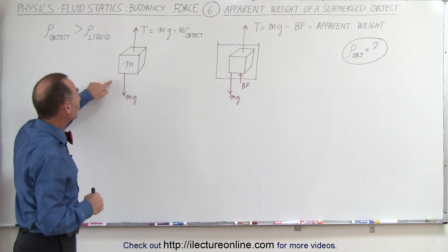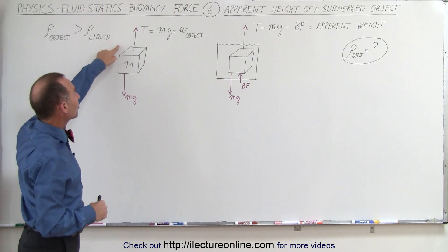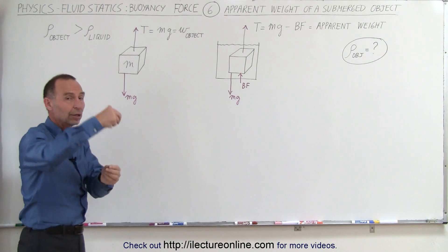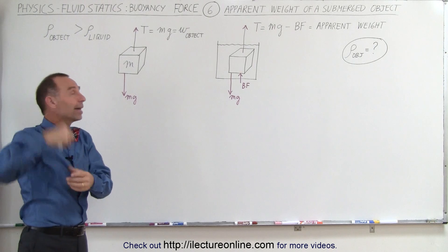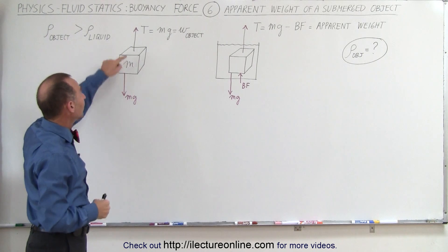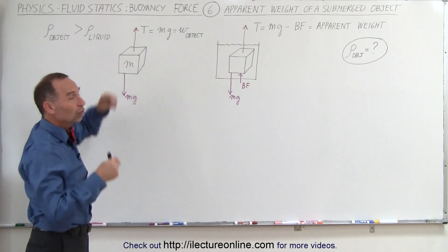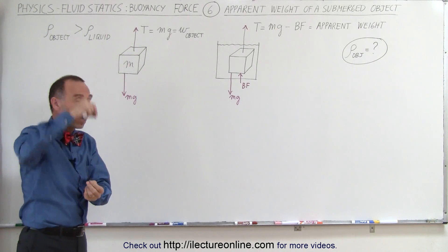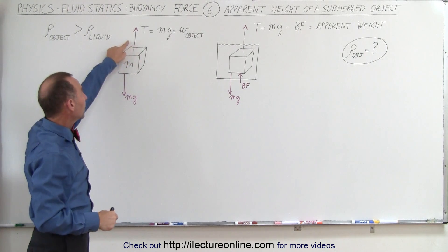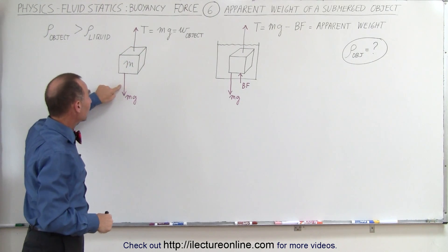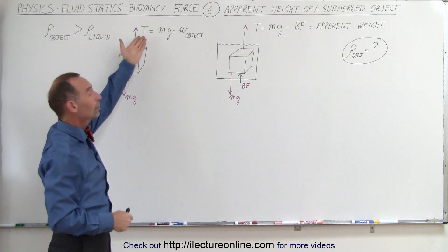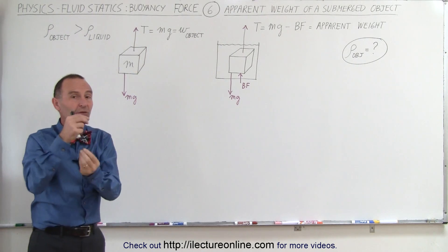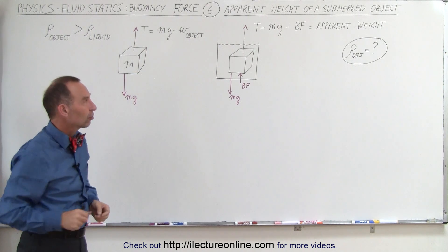If you want to know the weight of an object, we simply weigh the object on a weight scale, and the tension in the string that holds the object will be equal to the weight of the object. Therefore we can simply weigh it by measuring the tension on the string.